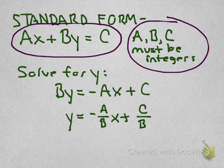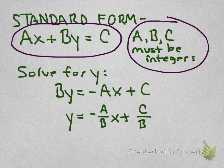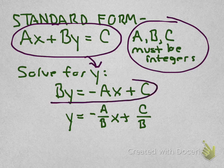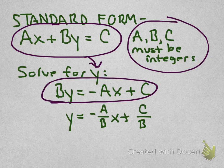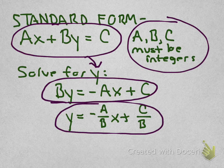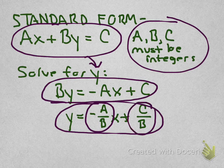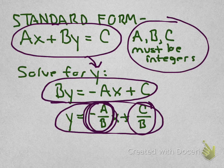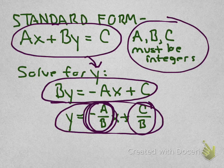Anytime we have a fraction, we want to multiply through by the least common denominator. But one thing we can do is take this general case and solve it for y, which I've already done. I started by moving Ax to the other side by subtracting it, and you divide everything by B. Now we have it in slope-intercept form, and this is interesting because now we have formulas for both the slope and the y-intercept. It's this piece, the opposite of A over B, that's really going to help us as we do these problems.